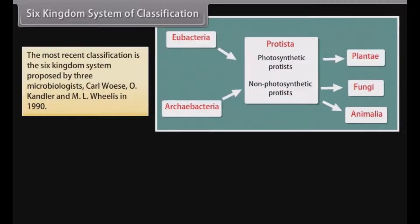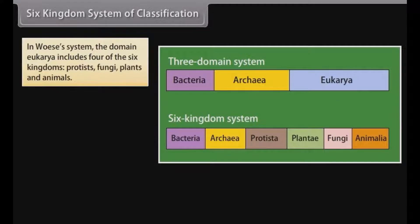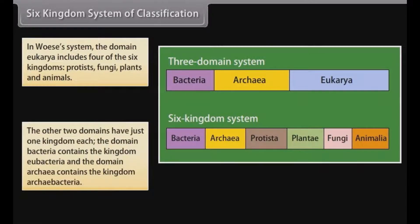Six kingdom system of classification: The most recent classification is the six kingdom system proposed by three microbiologists — Carl Woese, O. Kandler, and Emil Willis — in 1990. They proposed that all organisms be divided into three major groups called domains, above the kingdom level: Eukarya, Bacteria, and Archaea. In Woese's system, the domain Eukarya includes four of the six kingdoms — Protists, Fungi, Plants, and Animals — while the domains Bacteria and Archaea each contain one kingdom.